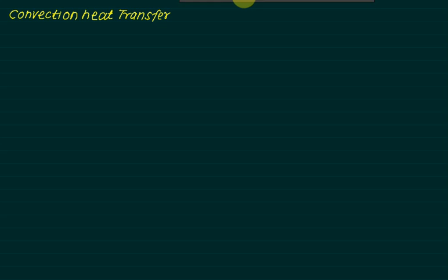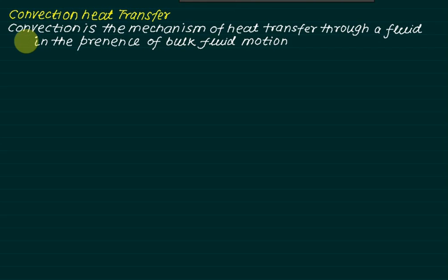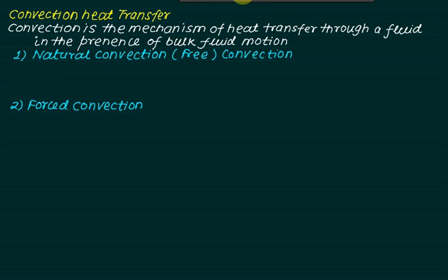In this lecture, we are going to cover convection heat transfer and its two types: forced convection and natural convection. Convection heat transfer is the mechanism of heat transfer through a fluid in the presence of bulk fluid motion. There are two types: natural convection or free convection, and forced convection.